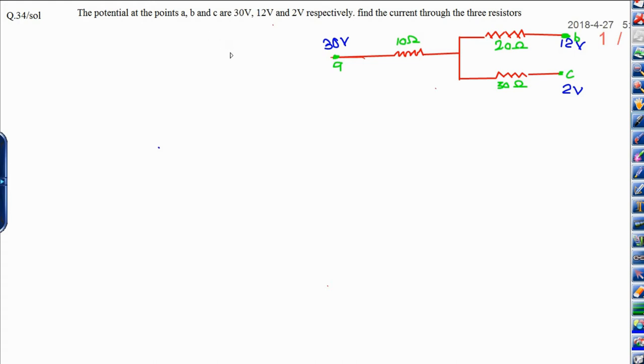In this question you can see here, find the potential at the point A, and B, C be given 30 volt, 12 volt and 2 volt, and 3 resistors are given 10 ohm, 20 ohm and 30 ohm. You need to calculate, find the current through the 3 resistors.